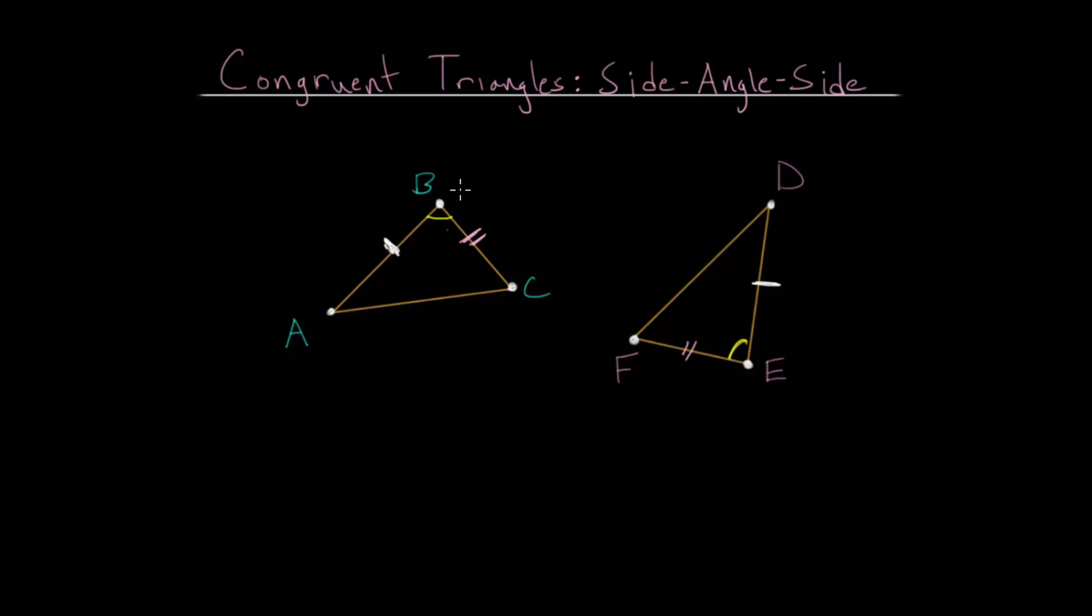...that if you have this relationship where you have a side, an angle, and a side, and correspondingly you have that side, that equal angle, and that equal side, then these two triangles are congruent to each other. And we can write that triangle ABC is congruent, this equal sign with a wavy line above it, to triangle DEF.